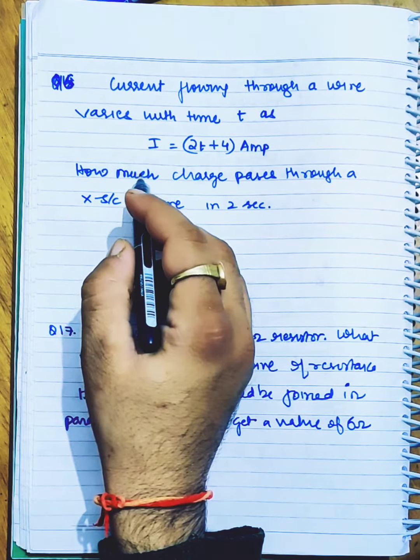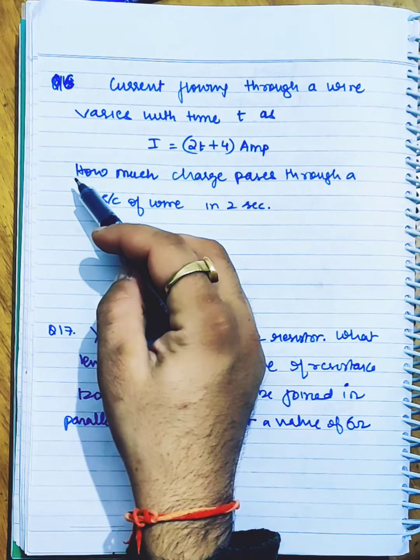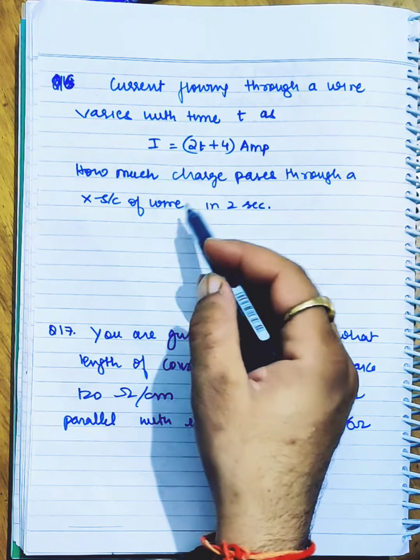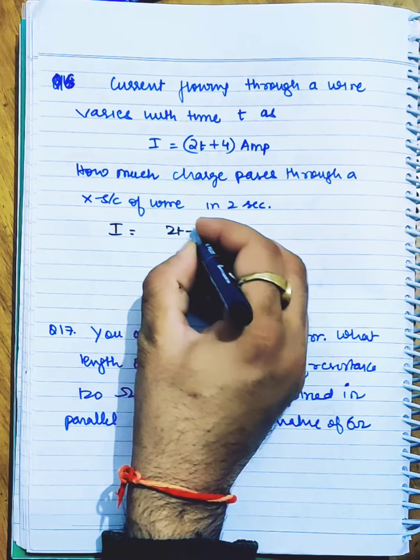Current flowing through a wire varies with time t as I = 2t + 4 ampere. How much charge passes through a cross section of wire in two seconds?